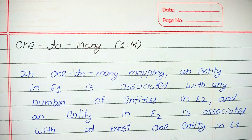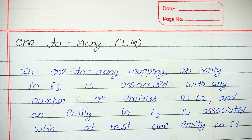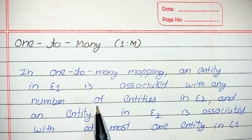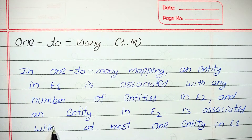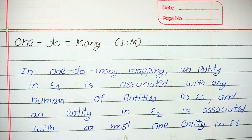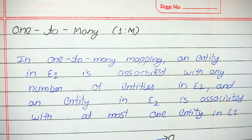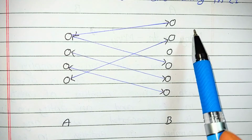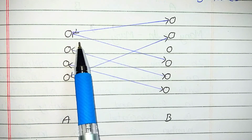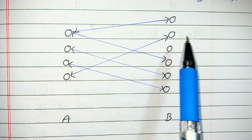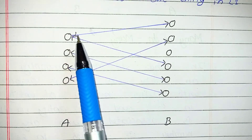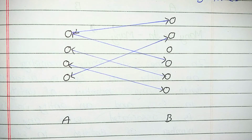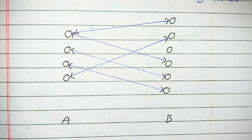The second one is one to many. In one to many mapping, an entity in E1 is associated with any number of entities in E2, and an entity in E2 is associated with at most one entity in E1. Here is the diagram of one to many — Entity 1 and Entity 2. This entity is connected to more than one entity, so this diagram is one to many.